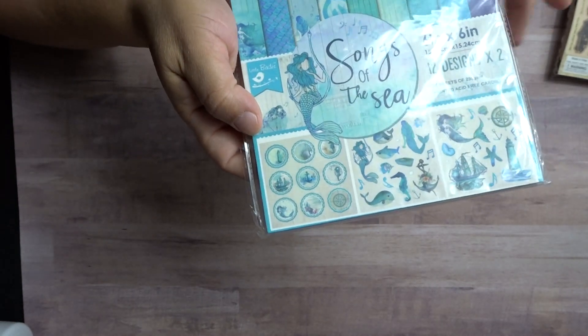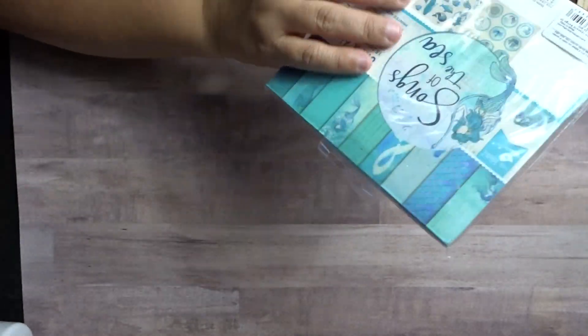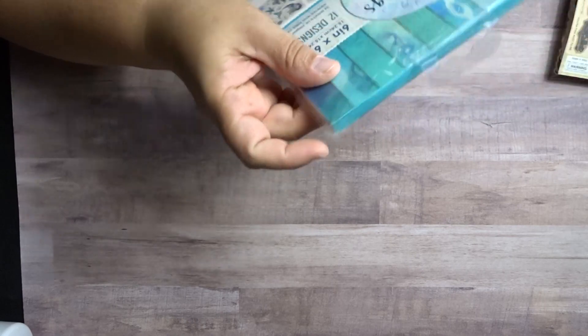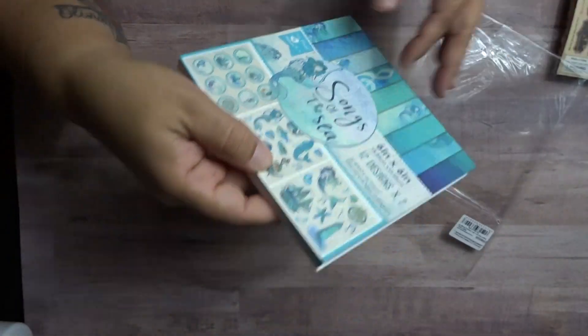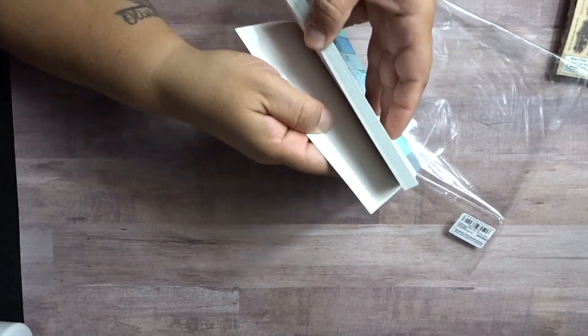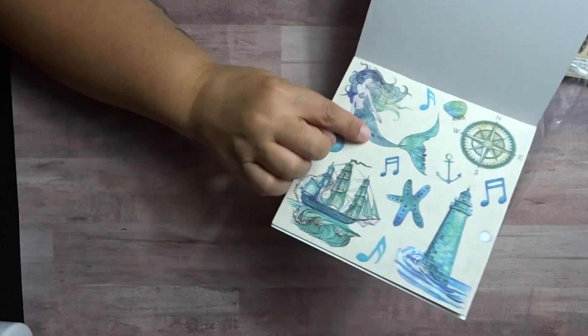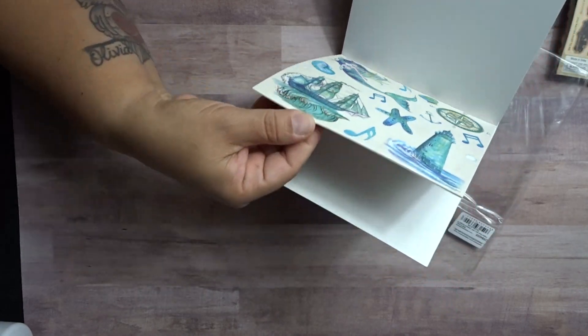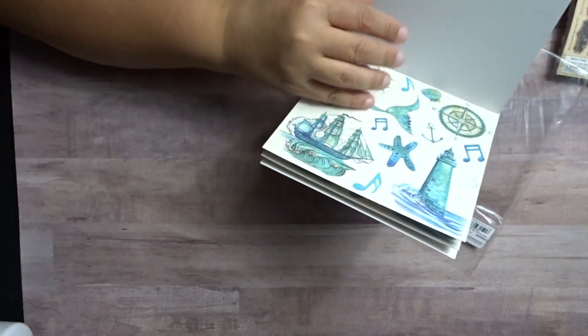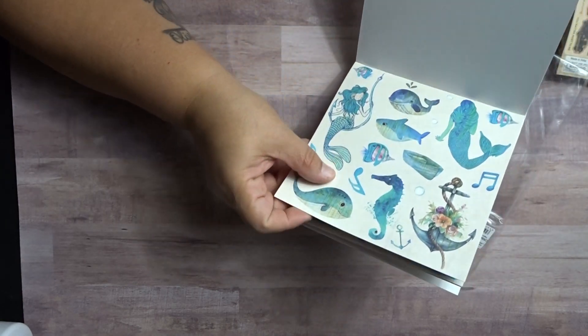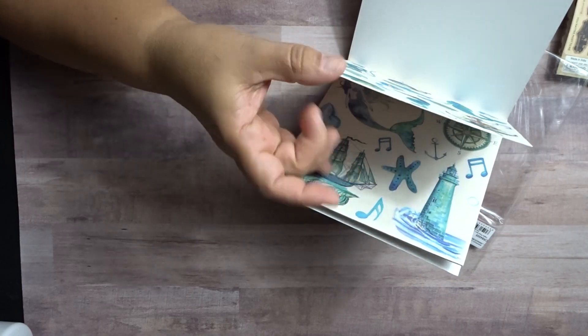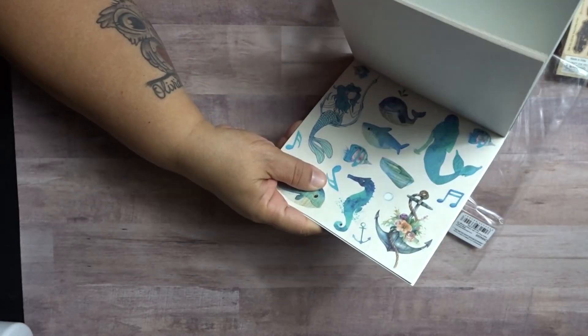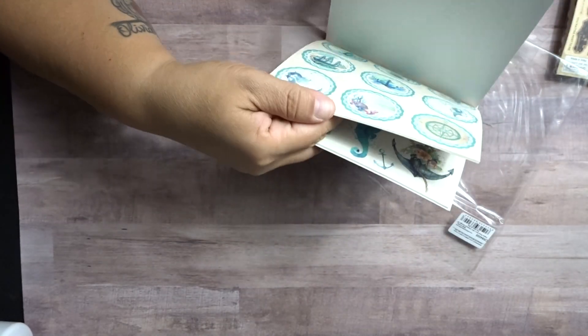Now this is Song of the Sea 6x6 paper pad here. I'll show you real quick inside. With these, you cut them apart. So you have your cut-aparts here. Two pages. And it's a really thick chipboard. Not chipboard, cardstock. It's really, really heavy-duty for the cut-apart pieces.